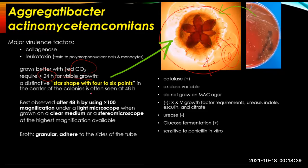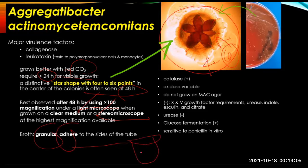A distinctive star shape with four to six points in the center of the colonies is often seen at 48 hours — the star shape is best observed after 48 hours of incubation, using 100x magnification under a light microscope or stereo microscope. In broth, the organism is granular and might adhere to the sides of the tube.